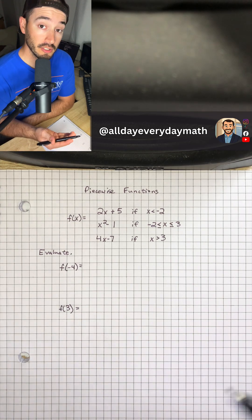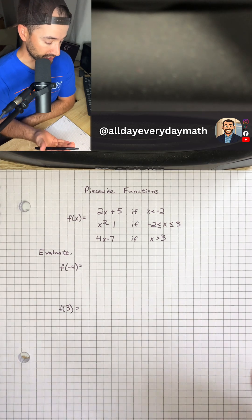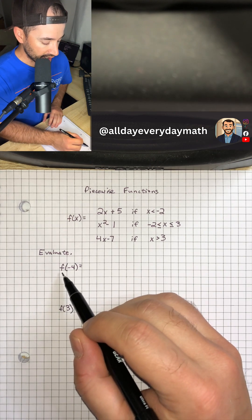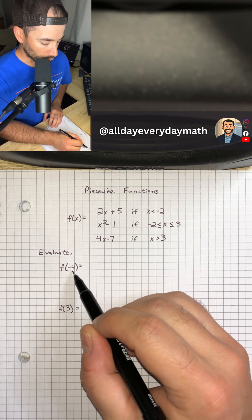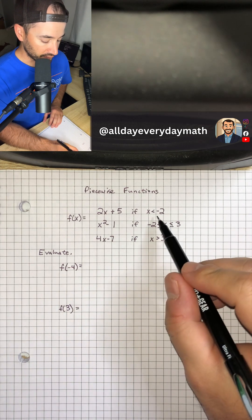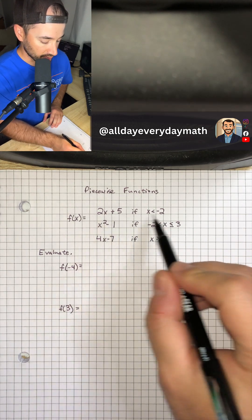So whenever we want to evaluate a piecewise function, we're going to look at this. It says evaluate f of negative 4. So whenever x is equal to negative 4, that's going to fall into this first section, right?